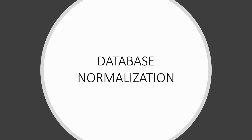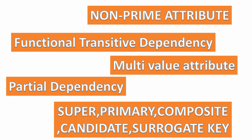Database normalization is one topic that is confusing for a lot of people. The reason is usage of terms which may sound complex initially, like multi-value attribute, non-prime attribute, partial dependency, functional transitive dependency, super key, candidate key, and similar terms. In this video series we will learn normalization in an easy and effective way with real project examples.